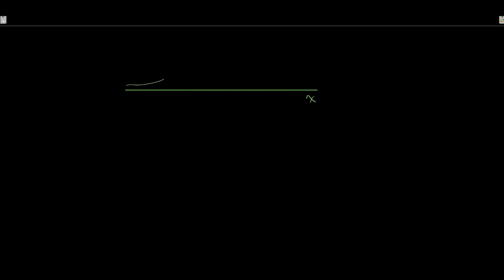Let's suppose we have a situation where X is normally distributed, centered around a mean of 500 with a standard deviation of 50. In this case, let's presume we want to know the probability of witnessing a value of 580 or more.